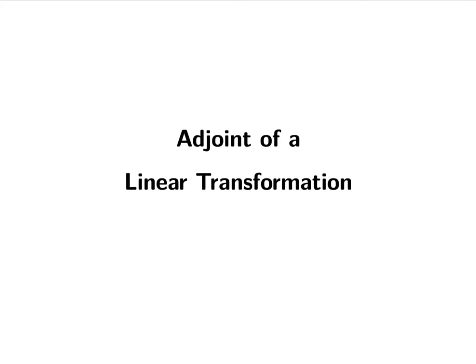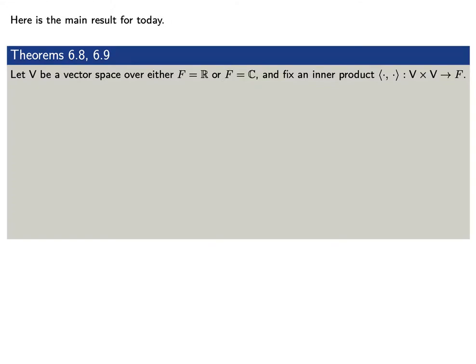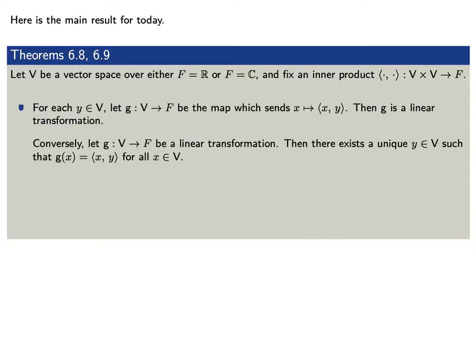Today we're going to talk about the adjoint of a linear transformation. Say that v is a vector space over either the real numbers or the complex numbers, and let's fix an inner product. For every vector y in v, let g be the map that takes a vector x to the inner product of x and y. Then g is a linear transformation. Conversely, if g is a linear transformation from v to our field F, then there exists a unique y in our vector space v such that g of x is equal to the inner product of x and y, for every x in the domain v.